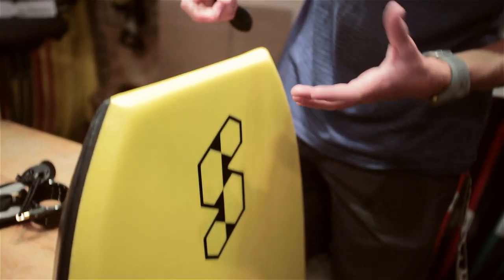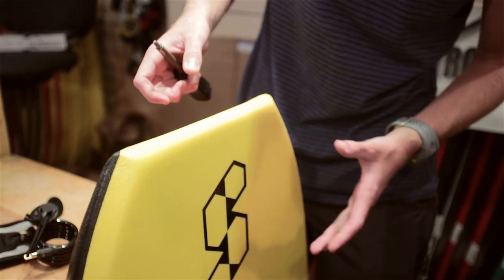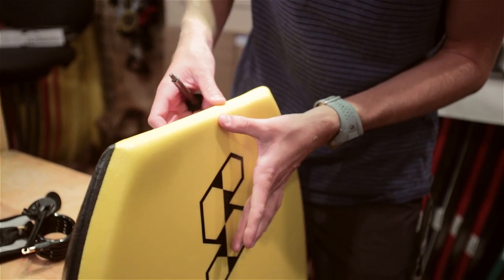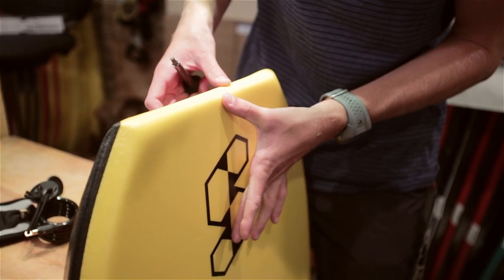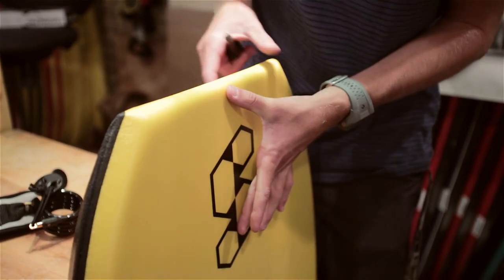First, you're going to want to measure out around 6 to 8 inches from the very center of the board, from the top to about the length between your thumb and your middle finger.